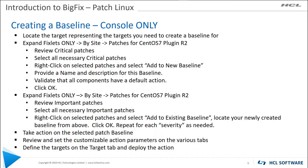Baselines are created in the console. Remember, baselines are a snapshot in time — when you add fixlets to a baseline, BigFix takes a snapshot of that fixlet at that point in time. I expand by fixlet, filter by site, look for CentOS patches, review for criticals, select what I want, then right-click and add to a new baseline. Give the baseline a name and description, then validate that all components have default actions — everything must have a default action or it won't work.